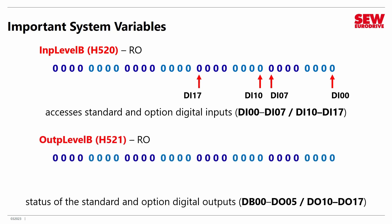And here is how you find out what the output levels are: OUTP Level B in H521. This tells you what all the outputs are doing. So if you flip those outputs and you want to confirm they've changed, come to this location and read it. Notice you can even read the status of the brake, DB00 — it is actually available, so you can query its status here. You can't control it, of course, but you can read it. These are the standard output I/Os, and these are the expansion I/Os.